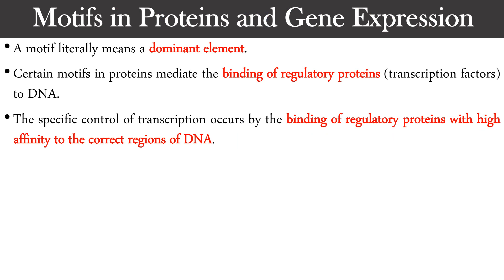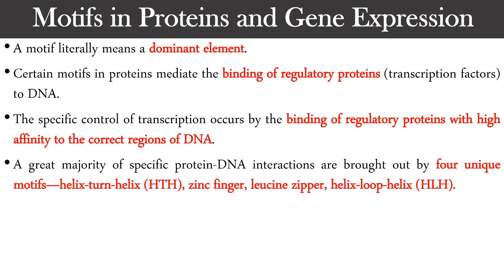This protein, along with the transcription factor, binds to a specific region of the DNA and manages gene regulation. There are four different types of motifs: helix-turn-helix motif, zinc finger motif, leucine zipper, and helix-loop-helix. Today we are going to talk about the leucine zipper motif, which is one kind of DNA binding protein motif.